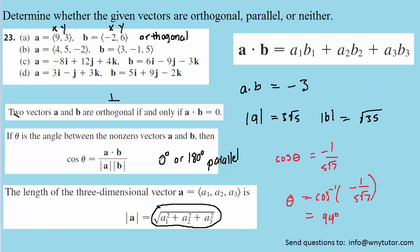We can see that 94 degrees is not 0, nor is it 180 degrees, so these vectors are not parallel. Since the vectors in part b were neither orthogonal nor parallel, the only conclusion is that they are neither. That is the correct answer for part b.